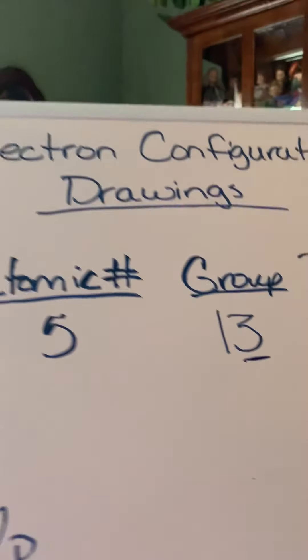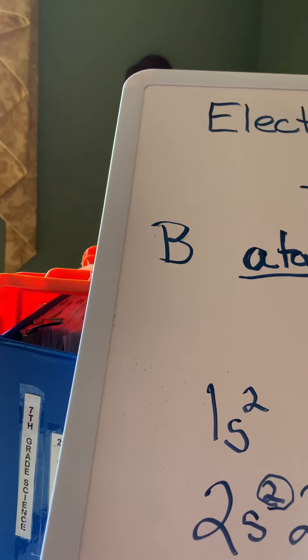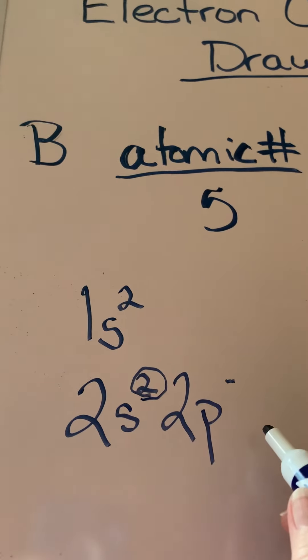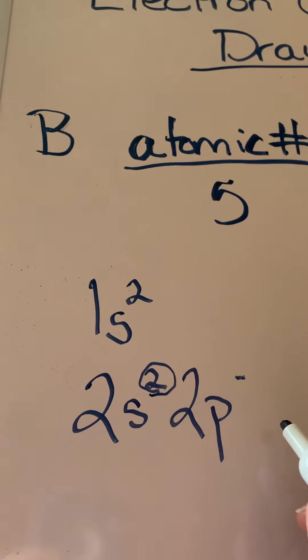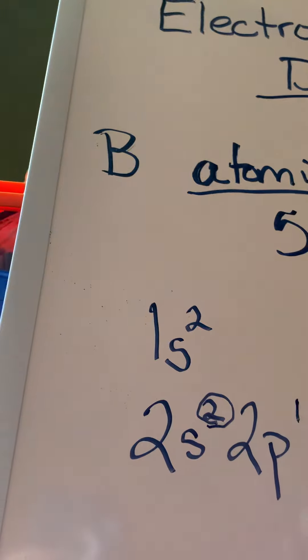So this number right here is going to be added to whatever number we put here, and that has to equal three. Okay, so two plus what is three? Two plus one is three.